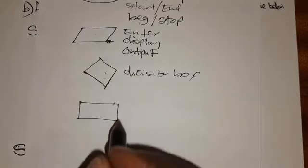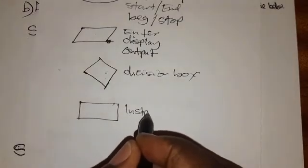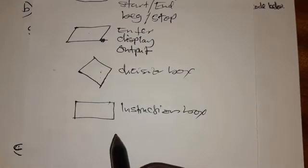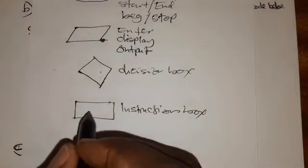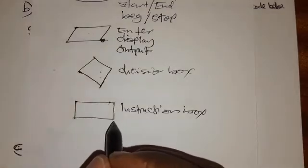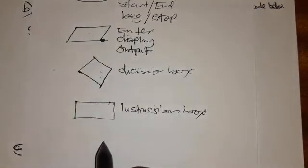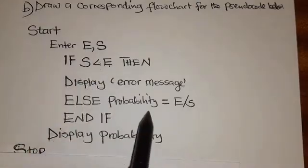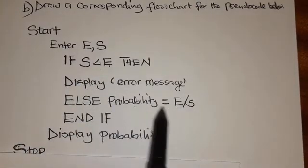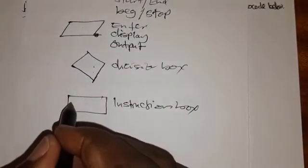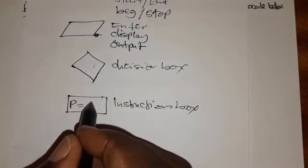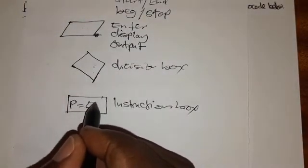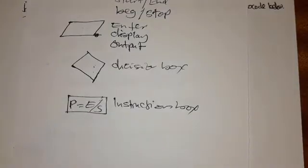The last shape is the rectangle, also called the instruction box. If you have any formula, this is where you input it — this is where you feed your formula. For example, here we have the formula: probability is equal to E over S, so we write P equals E slash S.